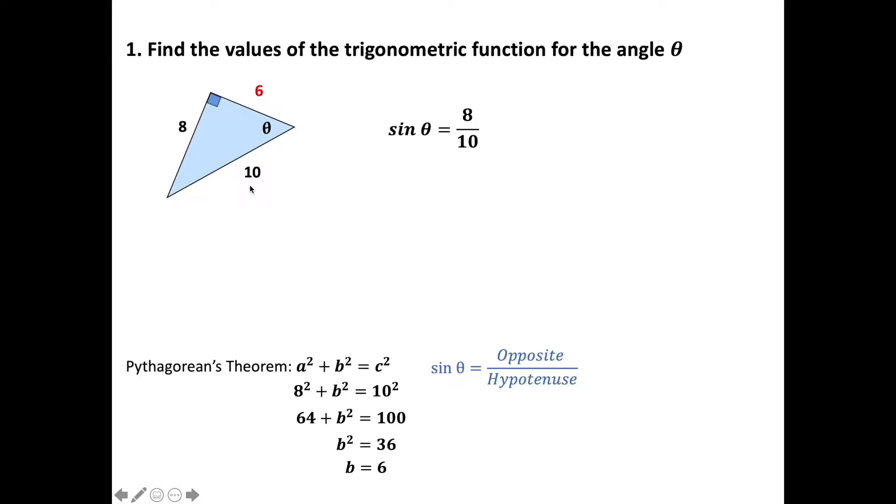8 divided by 10 we can reduce that, so that's going to be 4/5. Next we'll do cosine. Cosine is the adjacent divided by the hypotenuse. So the adjacent, that's the one next to it right here, that's our 6. 6 divided by 10, and we can reduce that as well to 3/5.